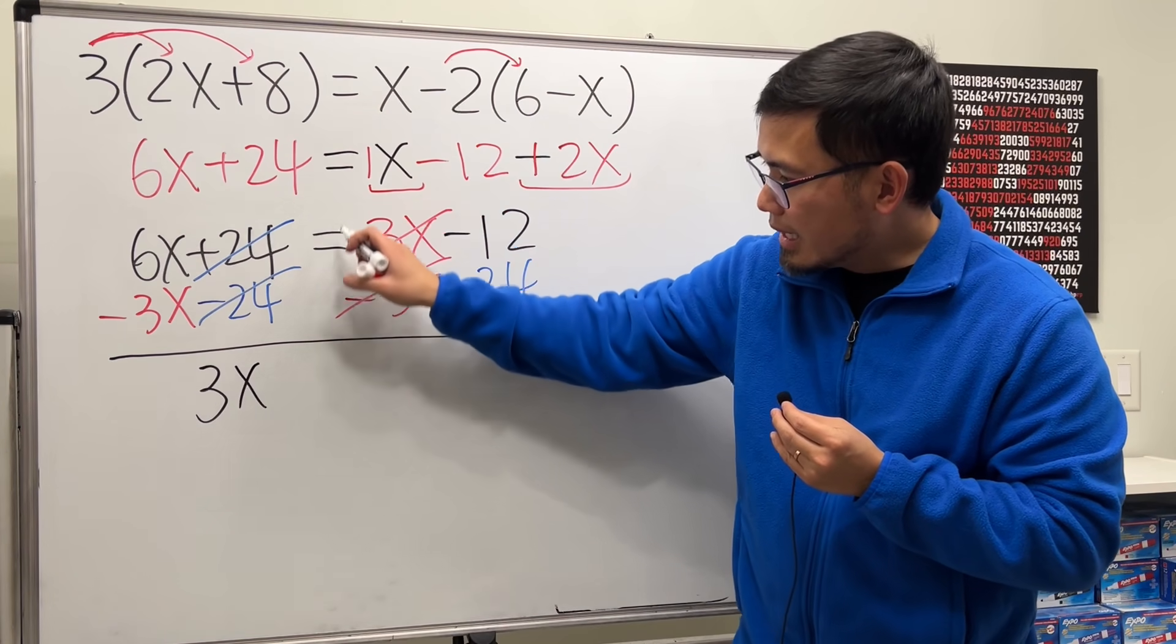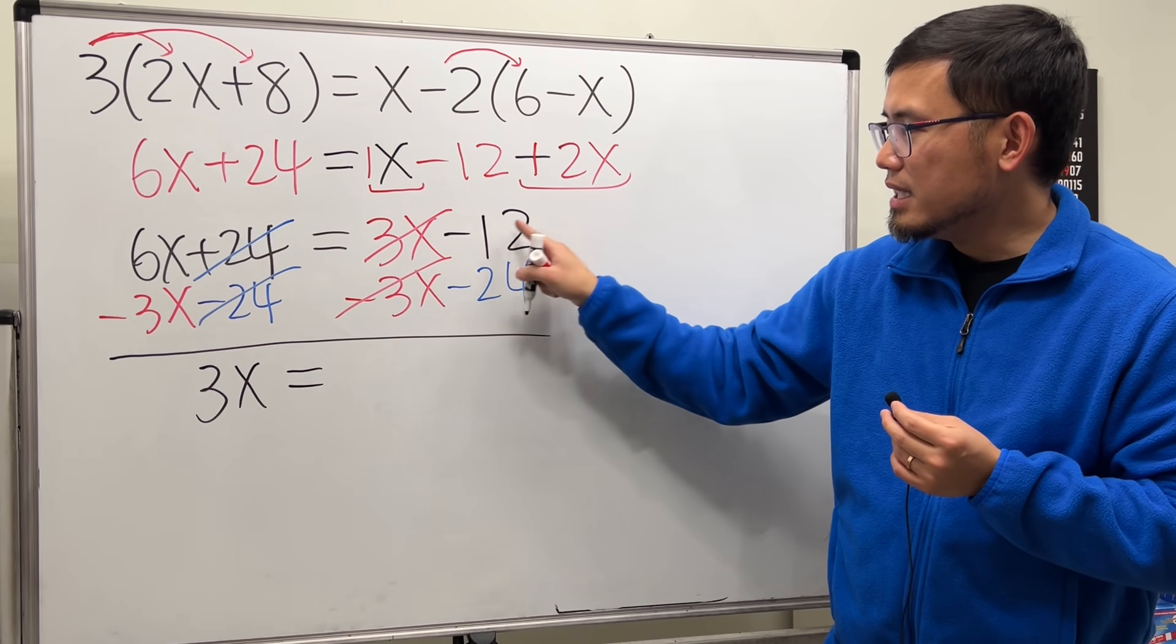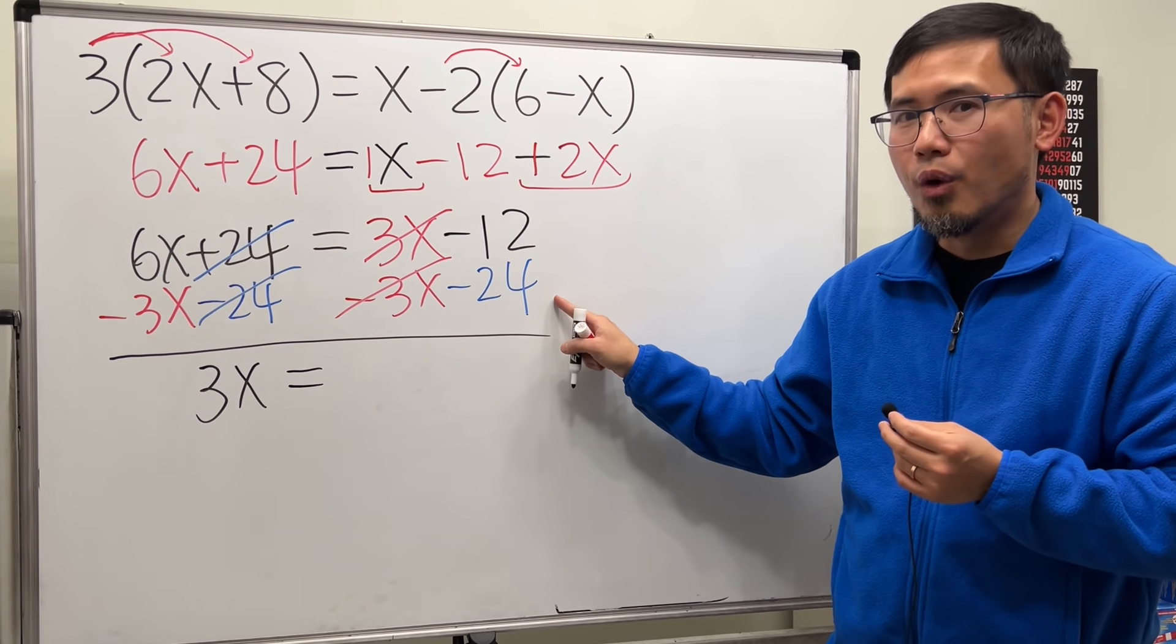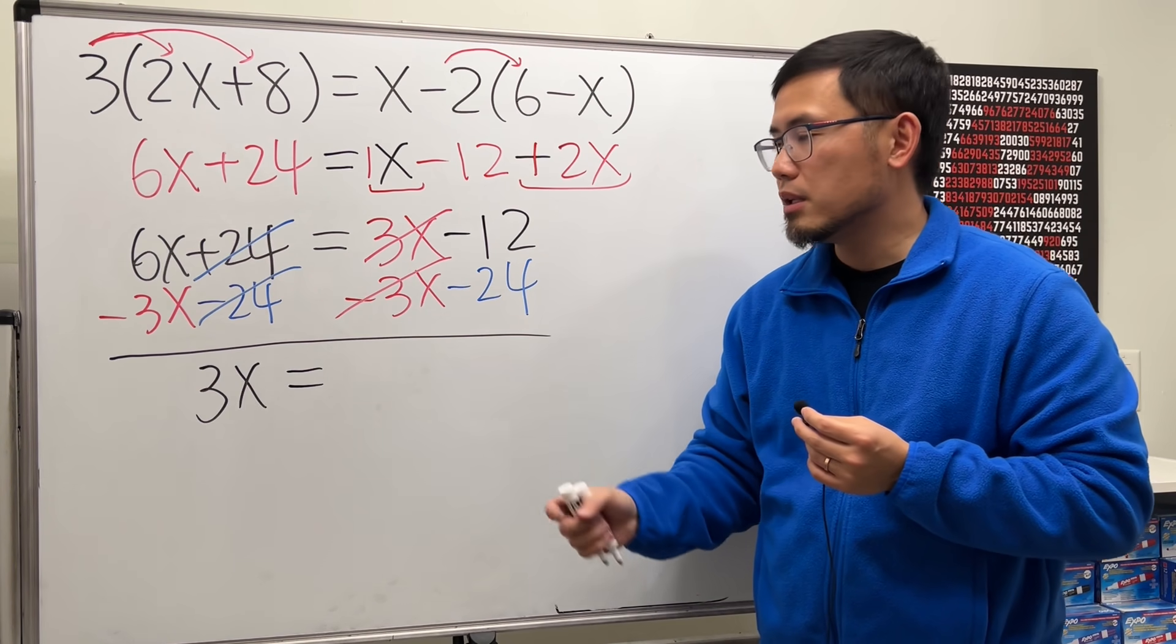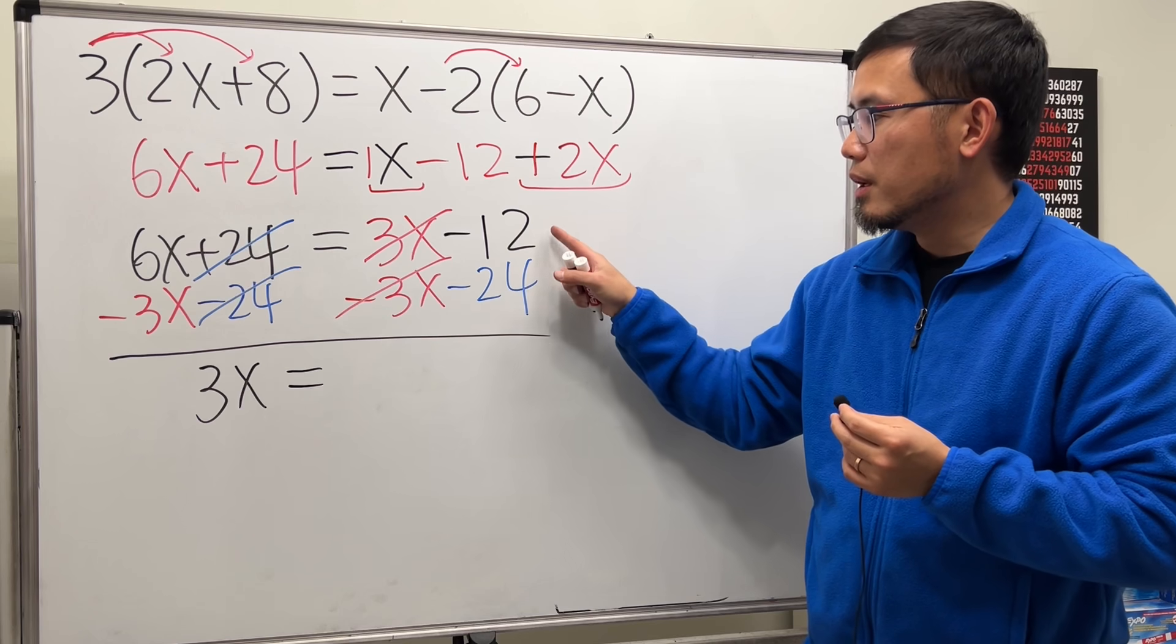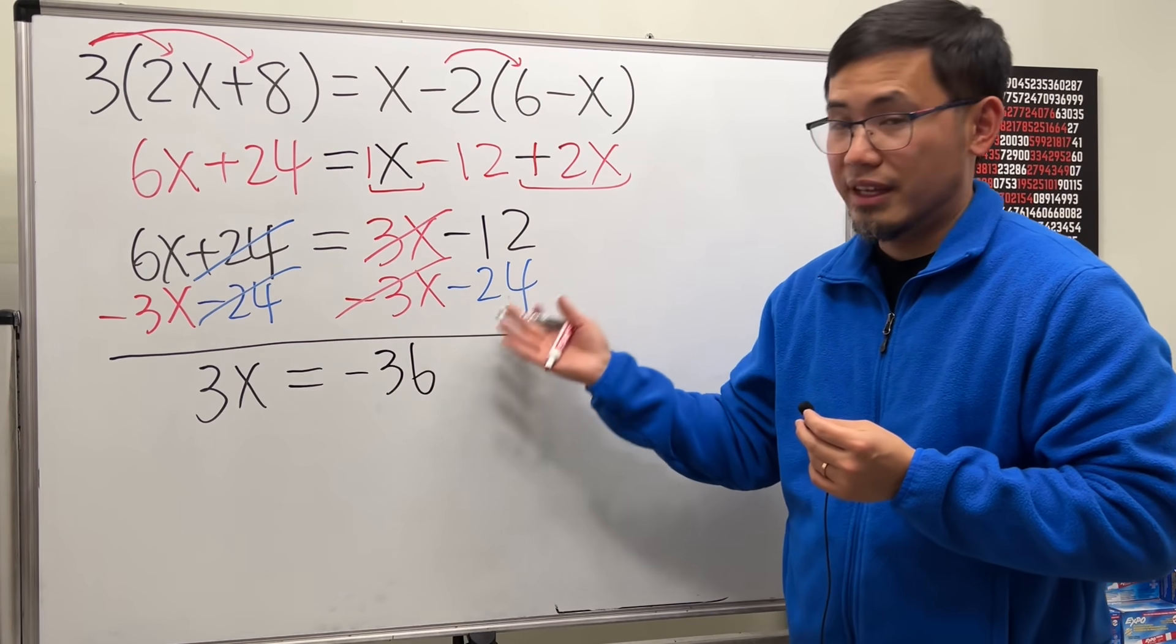And again, line up the equal sign. Here we have negative 12 minus 24. And remember, both of them are negative and you are combining two negative numbers. So you just combine the numbers. 12 and 24 is 36, but it stays negative.